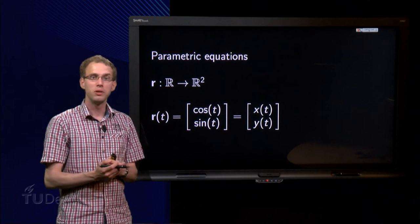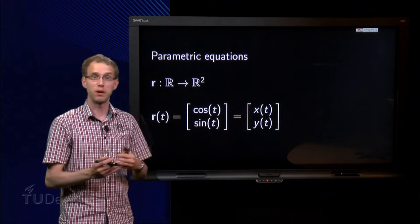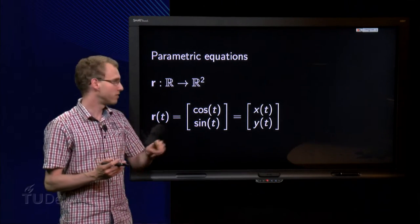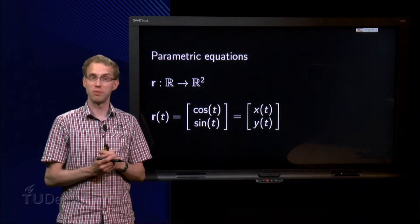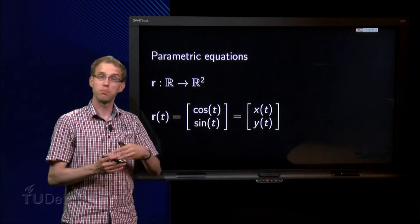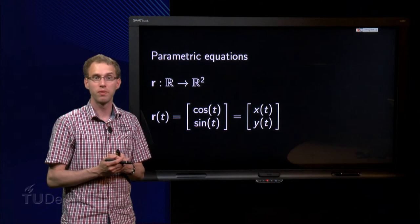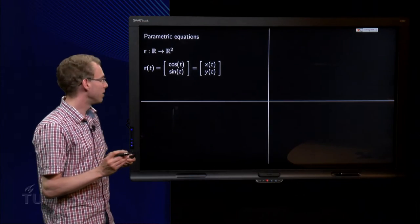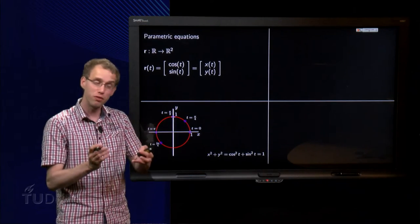And how do we interpret this function here if we see it as a parametric equation? Well, then we say this first component is x, second component is y, and we see all these vectors as points on a curve in 2D. But how does the curve look like? Well, let's see. What happens if we substitute a few values of t?